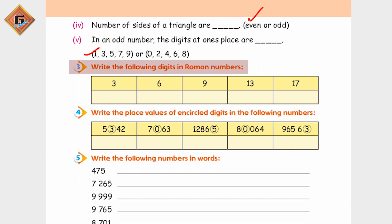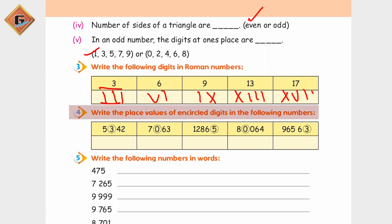Next hamare paas hai: write the following digits in Roman numbers. To this is 3, 6, 9, and 17. Write the place value of the encircled digits in the following numbers.